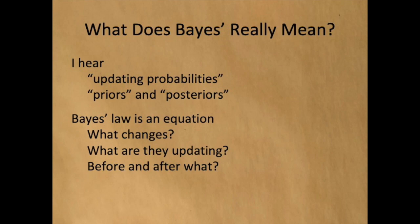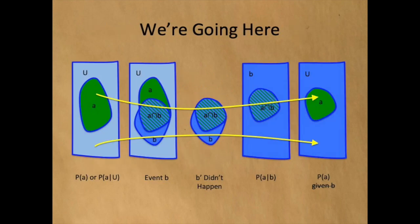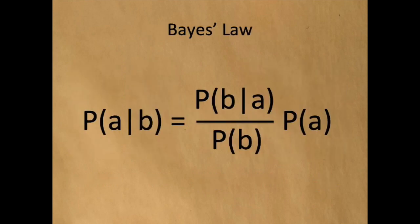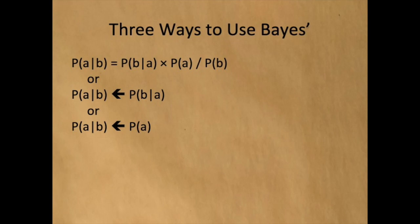Good questions. And spoiler alert, this is the picture that we're going to go to, but we're not going to get there just yet. Let's start with Bayes. Bayes' law literally says the probability of A given B equals the probability of B given A divided by the probability of B times the probability of A. There are three ways to use Bayes. All of them are actually right, but two of them really miss the point, and only the third produces magic.